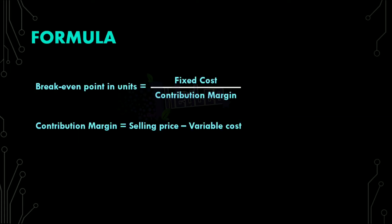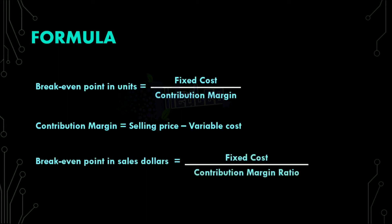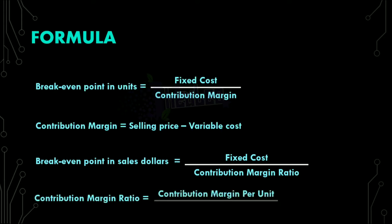Break-even point in units is fixed cost divided by contribution margin. Now, how do we calculate break-even point in sales dollars? That is fixed cost divided by contribution margin ratio. The contribution margin ratio is simply your contribution margin per unit divided by selling price per unit. Another way to calculate break-even point in sales dollars is to multiply the break-even points in units by the selling price.